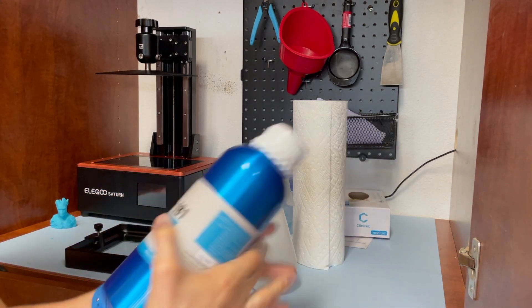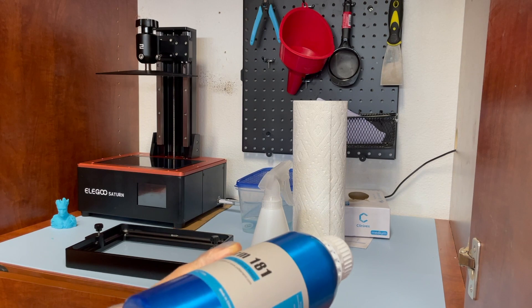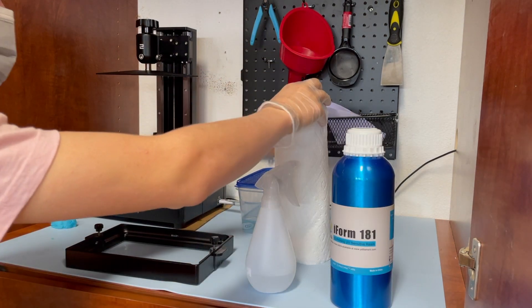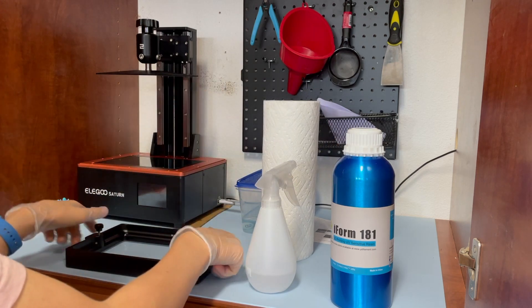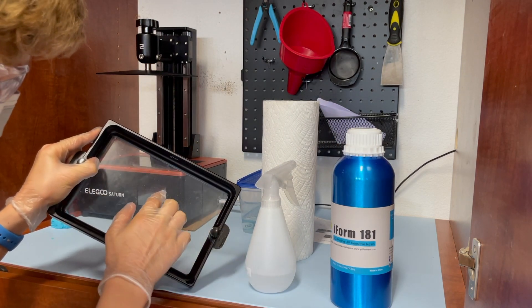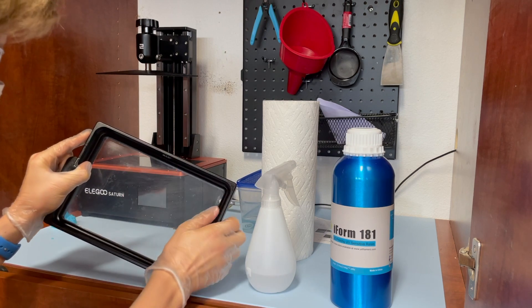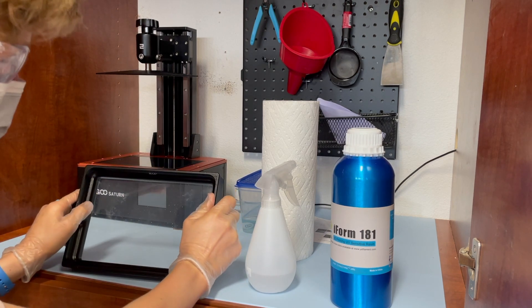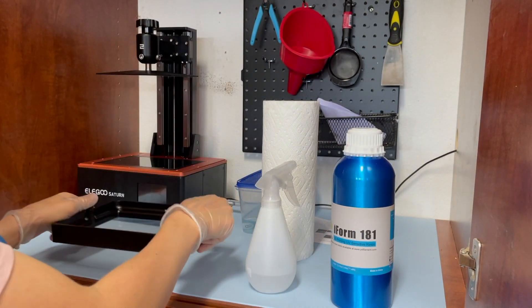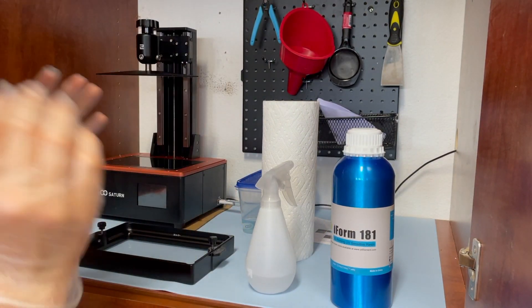Okay, so I got my new resin. And also, a quick thing to mention is when you're trying to get a print off but it's stuck onto the FEP, just rub your finger like that on the edges. Make sure there's no resin on your fingers and it pops off.